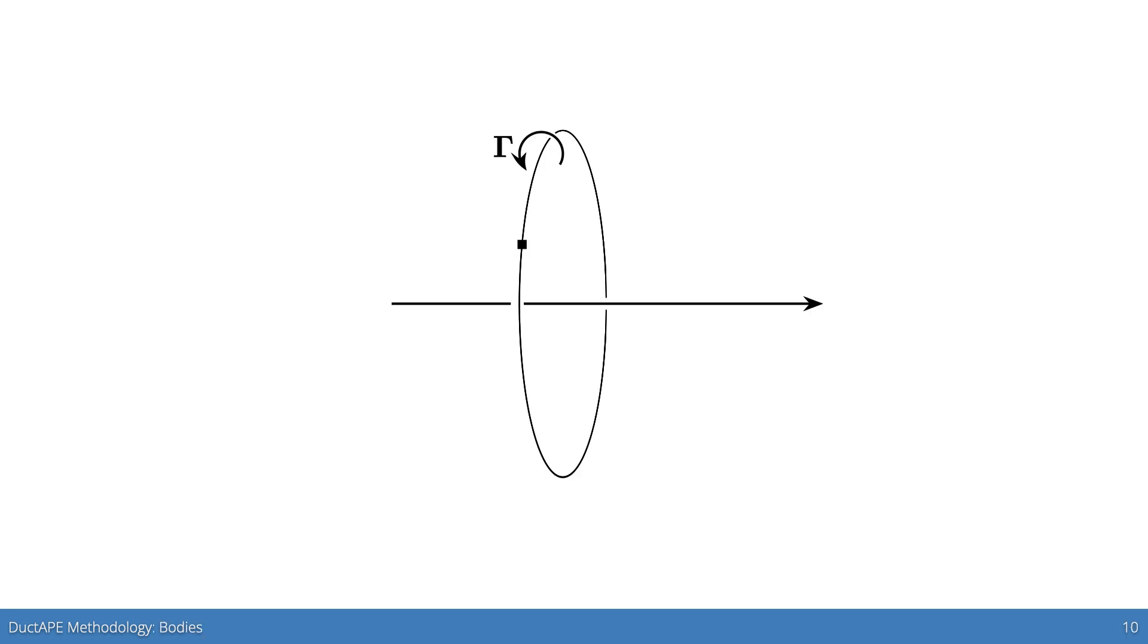The bodies, including the shroud and center body in duct tape, are modeled with an axisymmetric linear vortex panel method. This axisymmetric panel method is built on the concept of distributing axisymmetric vortex rings per unit length to create vortex bands, like this one.